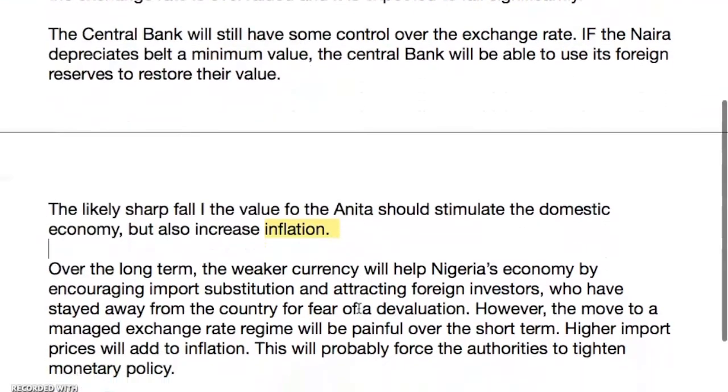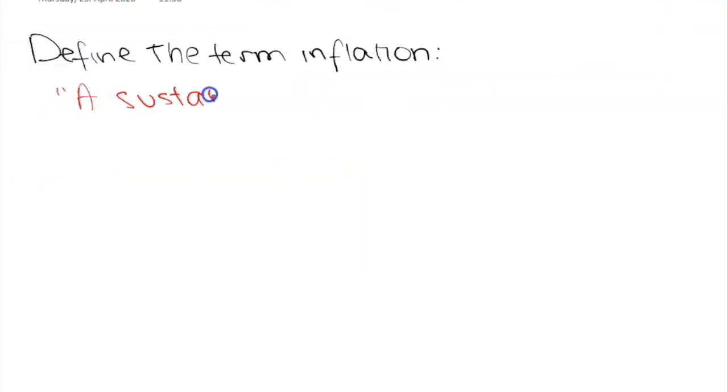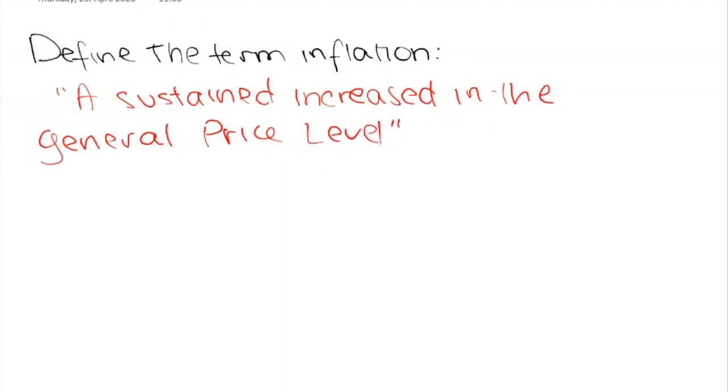The first question asks us to define the term inflation indicated in bold in the text. Inflation is a sustained increase in the general price level over a period of time. The main components of this definition would be sustained increase and in the general price level, and those will give you immediately two marks. What you should really be spending the most time on is the last eight-mark question. The biggest tip I have is memorize all the most common definitional questions that come up on Paper 2 so that these first two two-mark questions you can answer instantaneously.